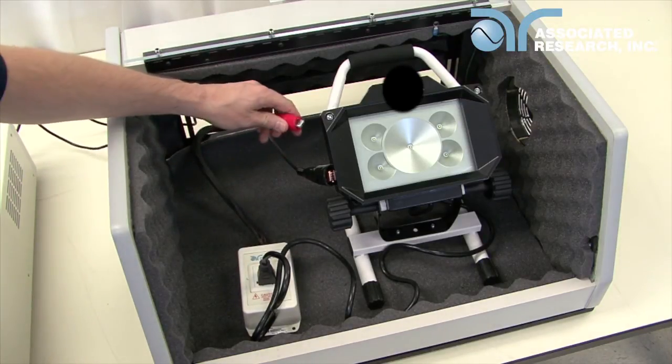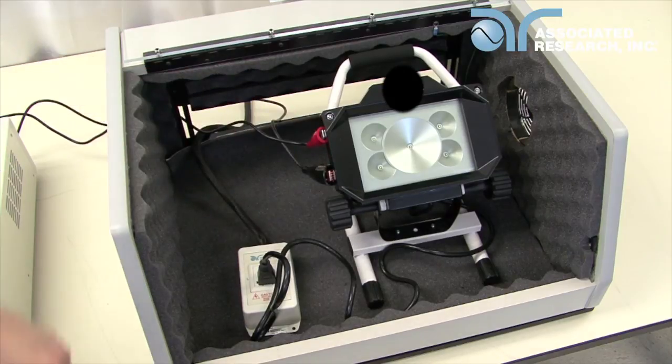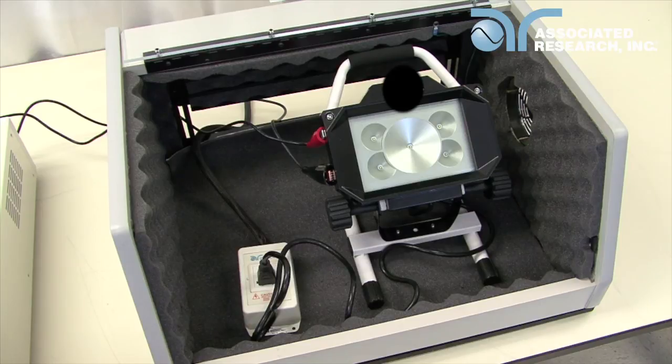If you're running line leakage testing that involves using external probes, connect your probe high, probe low, or both connections to the appropriate points on your DUT. In this example, probe high is connected to the chassis of the DUT for an enclosure line leakage test.